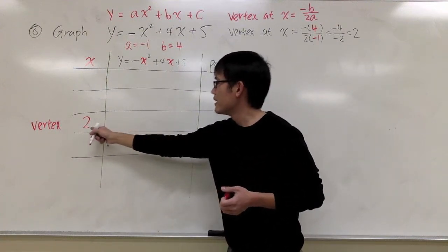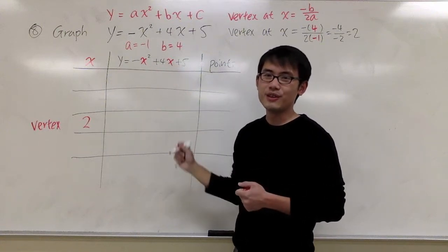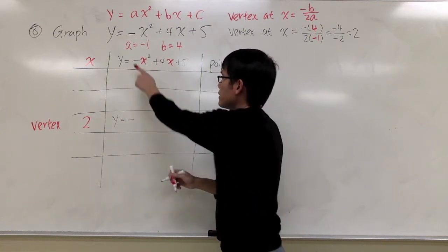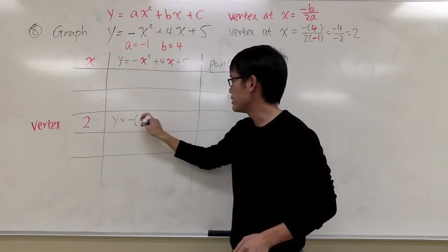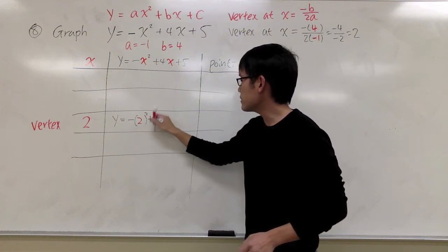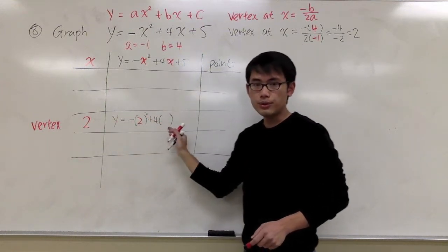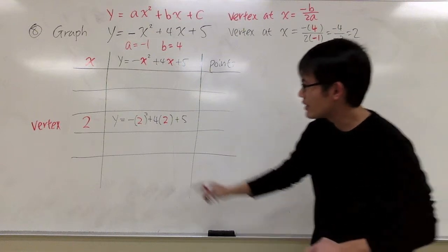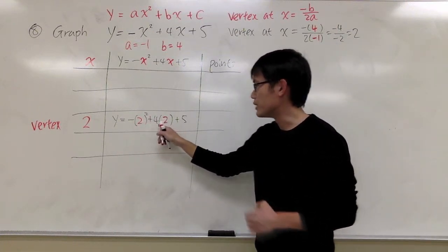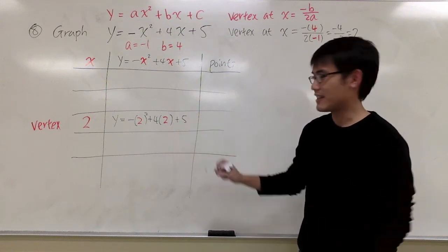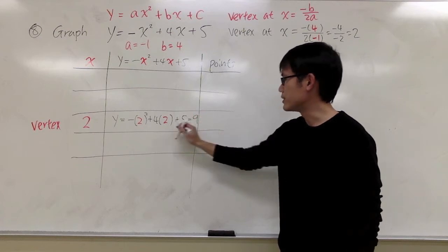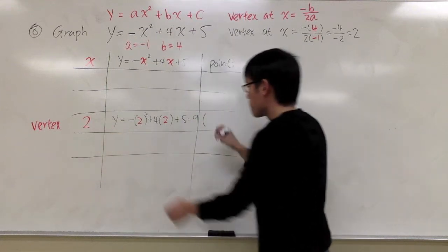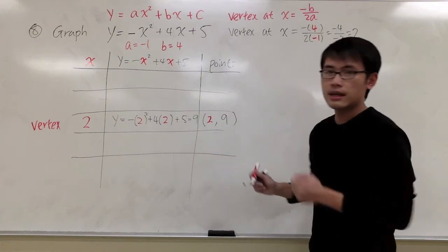Once we know the x value, we plug it into the y equation and solve for y. Plugging in x equals 2: y equals negative (2) squared plus 4 times 2 plus 5. That gives us negative 4 plus 8, which is positive 4, plus 5 — so y equals 9. The vertex point is (2, 9).